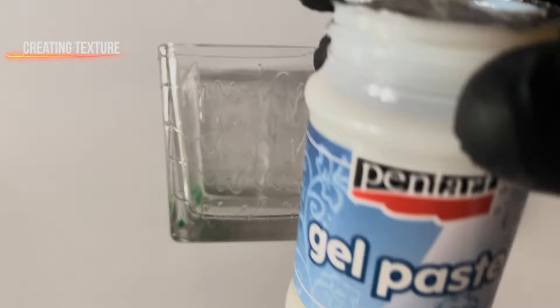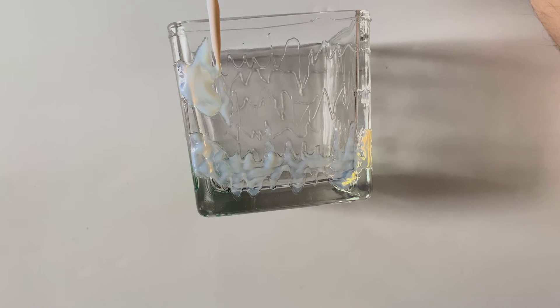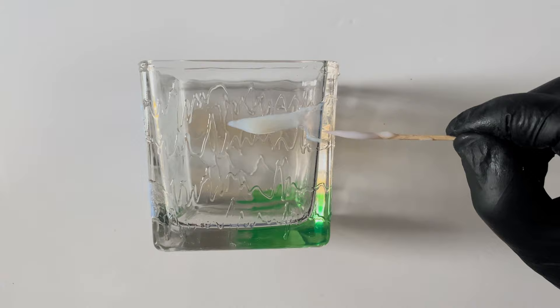After we finish with the lines, we start spreading the gel. The gel I use can be found in the description below. Spread it as you like, and when it dries it will be transparent. Create whatever texture you want; when it dries, it will be wonderful.